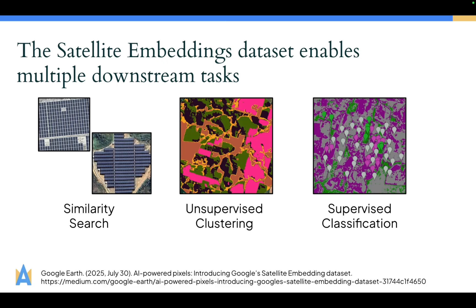Another downstream task is unsupervised clustering, where even without any labels you can find areas that are quite similar to each other and group them together. And there's also supervised classification, where with just a few labels you can get quite accurate and high-resolution land cover and land use maps.